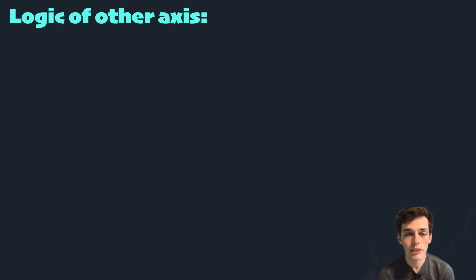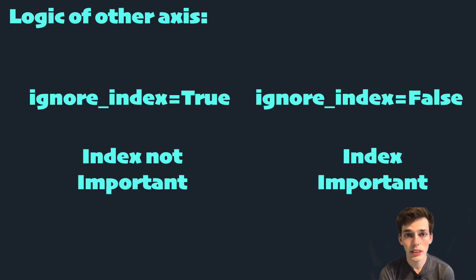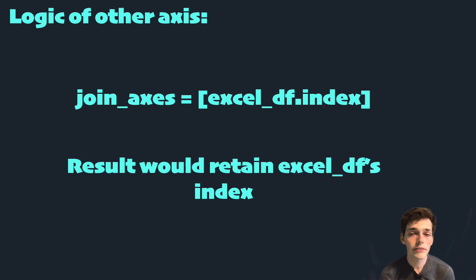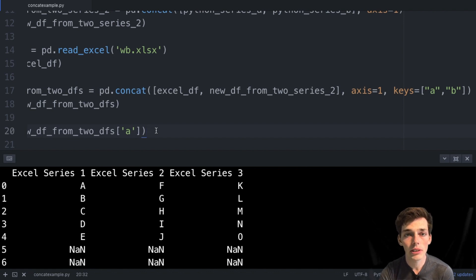The concat function also gives us a few other useful keyword arguments. We can use the join keyword to specify either the union or intersection of DataFrames when concatenating. The ignore_index keyword lets us specify whether to keep existing index values or not. We can also specify index values to concatenate along using the join_axes keyword. That's pretty much it for this video — concatenating Series and DataFrame objects is very straightforward using pandas. If you have any questions or comments please let me know, until next time.